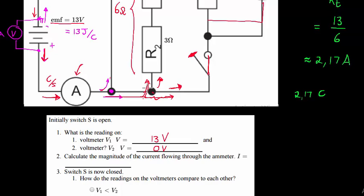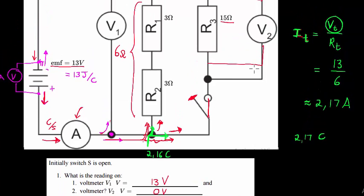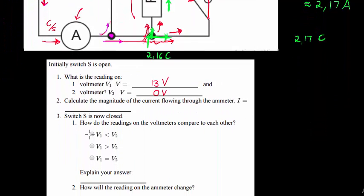Now the switch is closed. When those coulombs reach the junction, they now have two options: go up into the first branch with 6 ohms of resistance, or go straight into the second branch with 15 ohms. Most will take the path of least resistance — so more coulombs go through the first branch than the second.